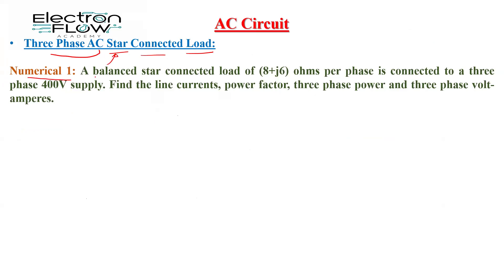The numerical is: a balanced star-connected load of 8 plus J6 ohms per phase is connected to a three-phase 400-volt supply. The load is connected in the star manner. Find the line currents, power factor, three-phase power, and three-phase volt-ampere — those parameters we need to calculate.